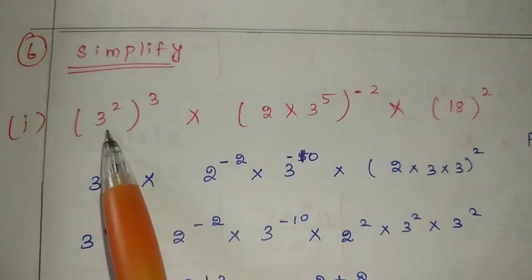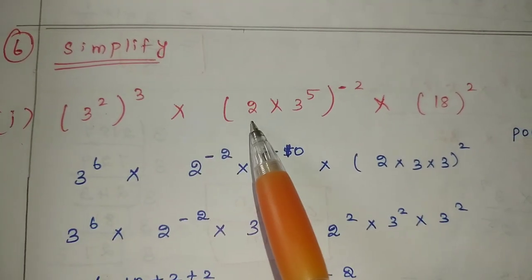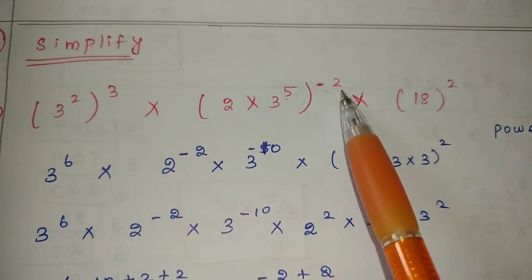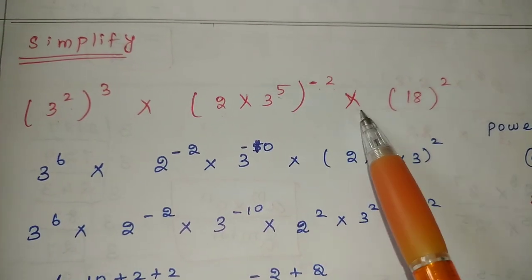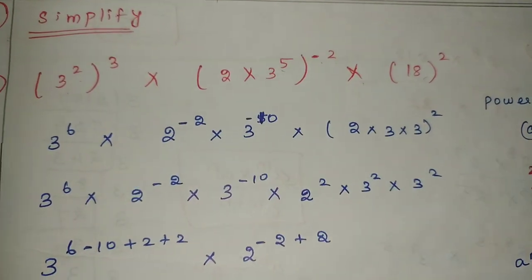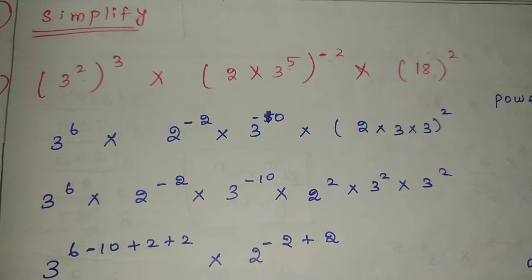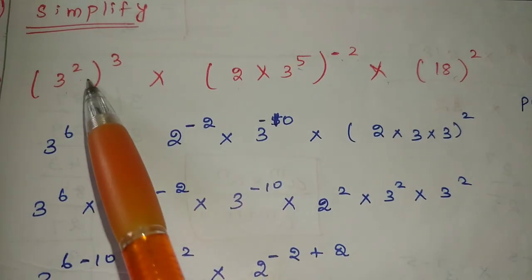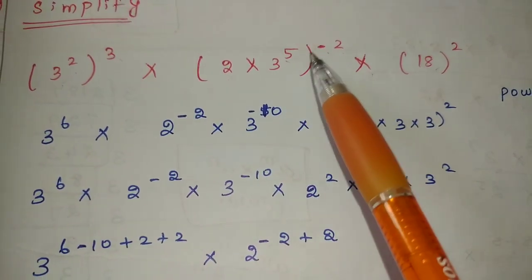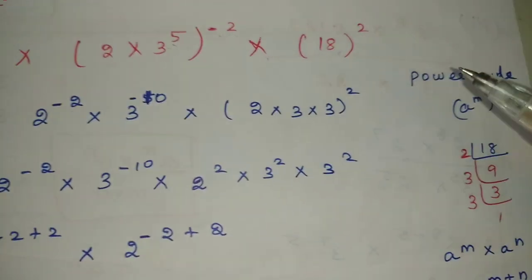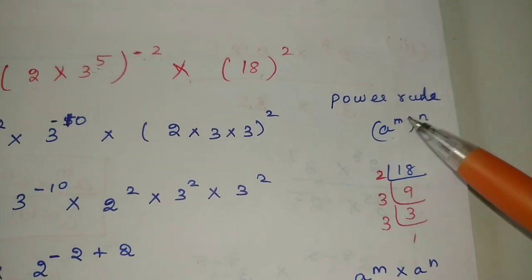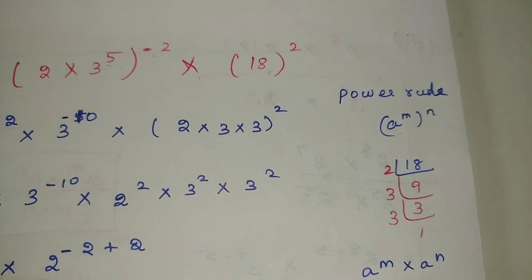First one: 3 squared, the whole cubed, into 2 into 3 power 5, the whole power minus 2, into 18 squared. So this is how to simplify. We will talk about what rule is inside and outside — the power rule. Power into whole power n.